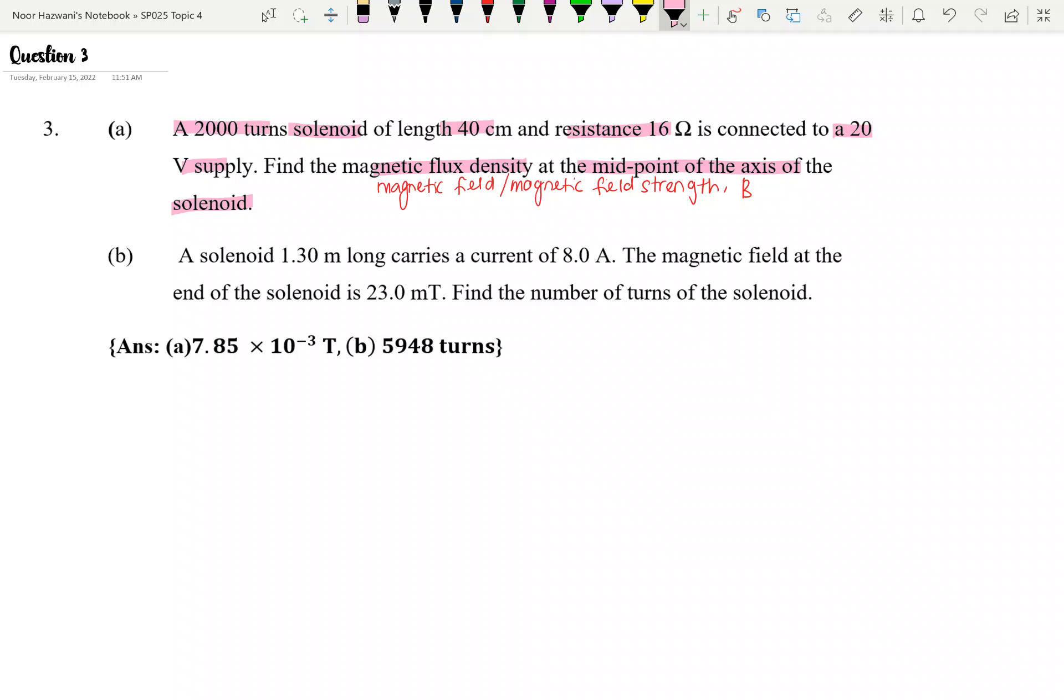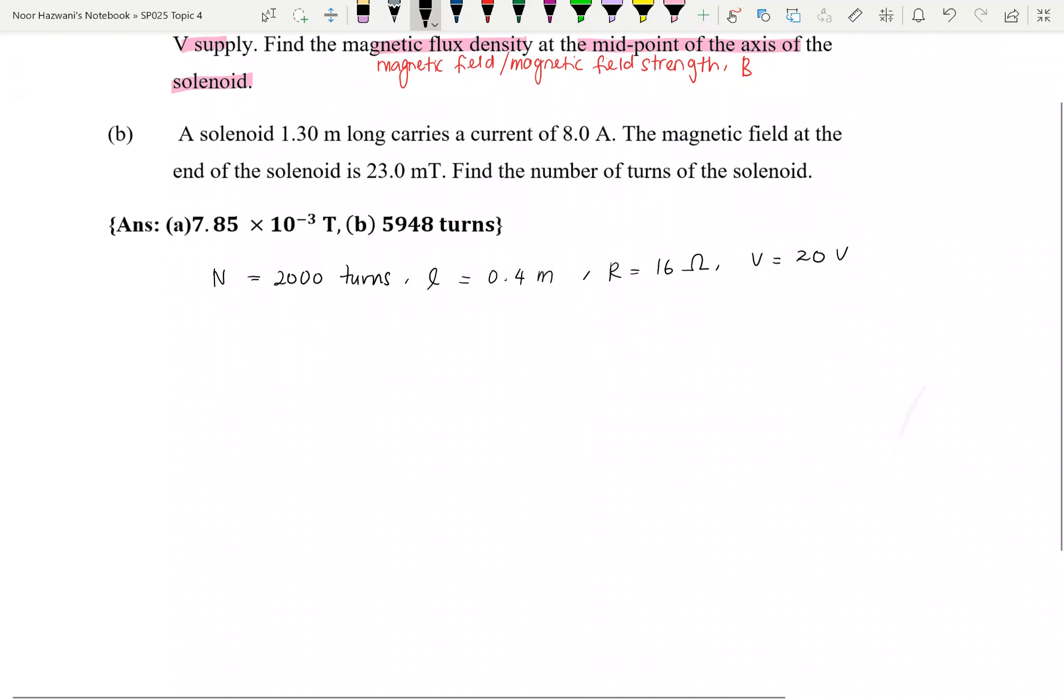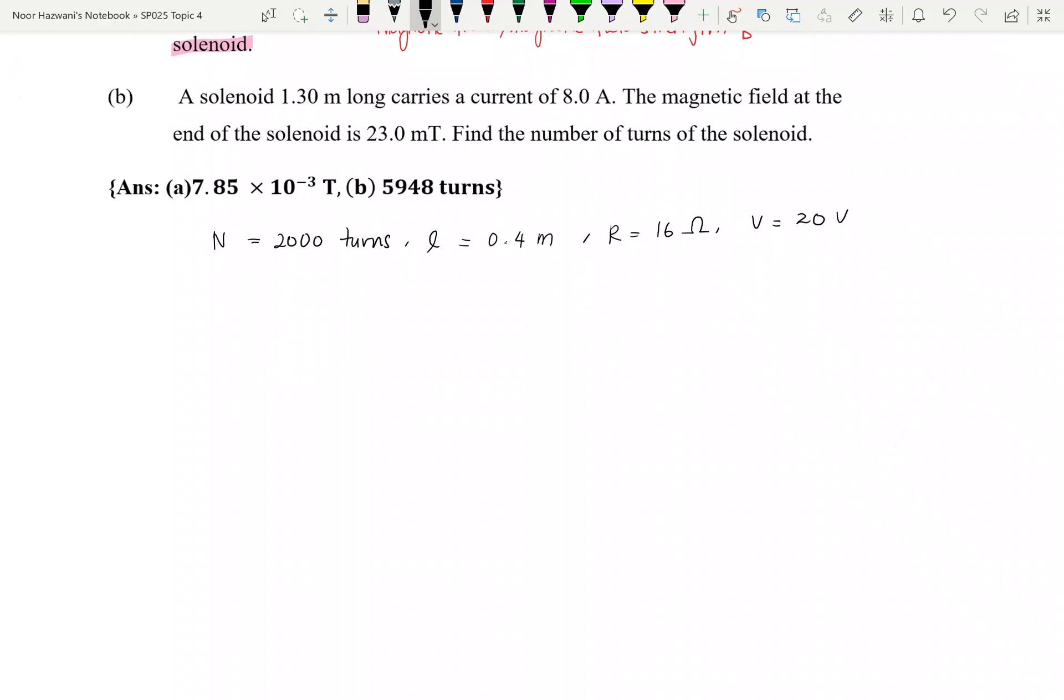So for part A, basically dia dah beri kita number of turns which is 2,000 and it give us the length. Convert kepada SI, so you dapat 0.4 meter and then diberi kita resistance 16 ohms and then dibagi kita voltage which is 20 volt. So kita kena guna untuk part A, kita kena guna B pada center.